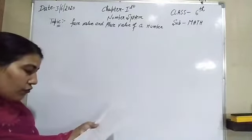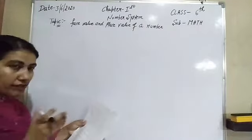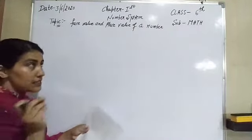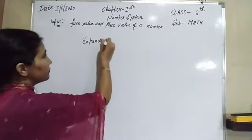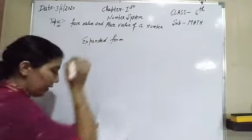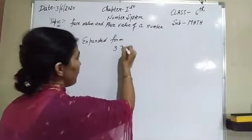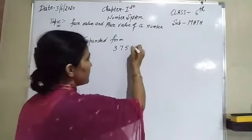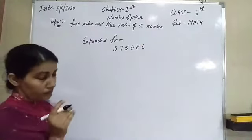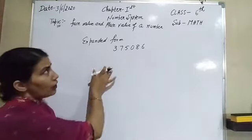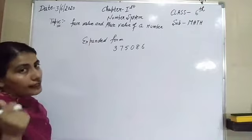The next question is: write the following in expanded form. We have the number 375086. We have to write this number in expanded form.